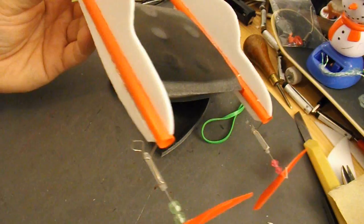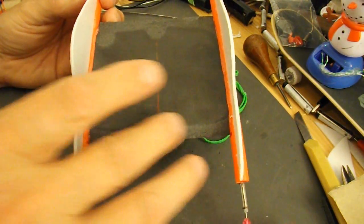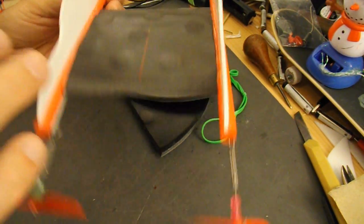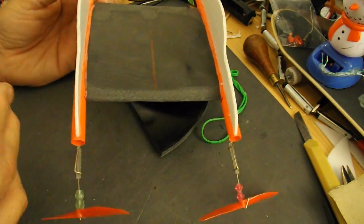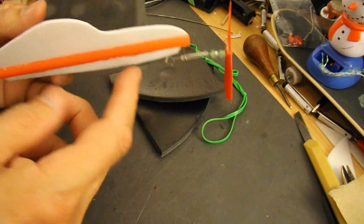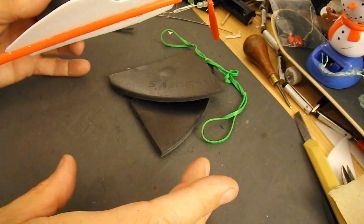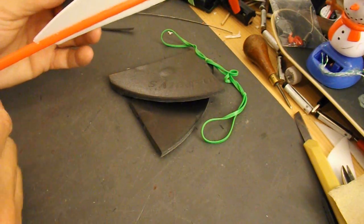That's the two fuselages joined together with a center section. That's a bit of polystyrene pizza tray for the central wing. But I'll use the thinner styrofoam plate for the outer wings. And then a tail at the back obviously.